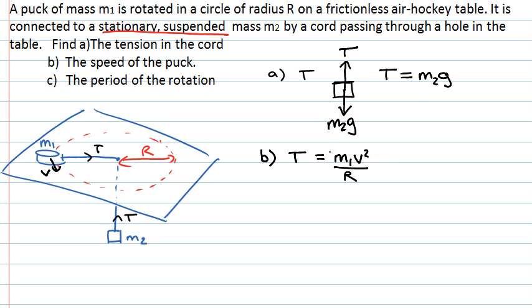times g. So all we have to do is rearrange this to get an expression for v. That gives us that v is equal to the square root of m2gR over m1. The third and final part of the question asks us to find the period of the rotation. Now, just to be confusing, the period